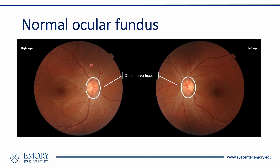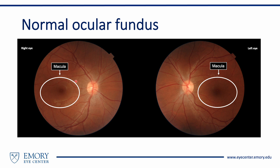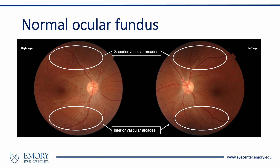Study the pictures of the right and left ocular fundus. The prominent oval structure is the optic nerve head, located in the nasal half of the ocular fundus of each eye. The retinal vessels emerge from the optic disc and branch out into the superior and inferior parts of the retina, called the superior and inferior vascular arcades respectively.